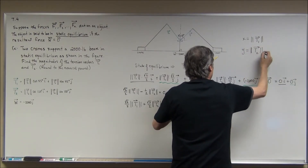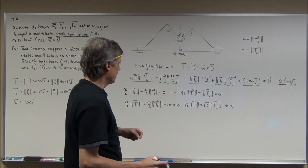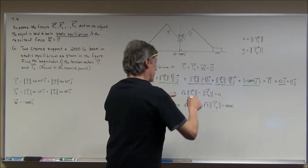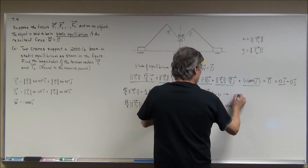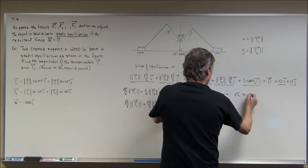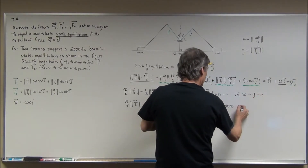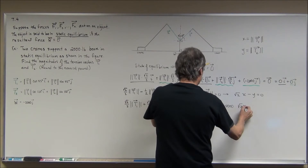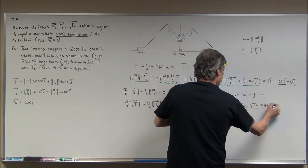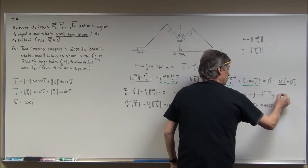This is just purely for algebraic simplification — we'll plug back in in just a second. Plugging in gives me the square root of 2 times x minus y equals zero. Down here, this gives me the square root of 2 times x plus the square root of 3 times y equals 4,000. I'm going to take the first equation and solve for y.